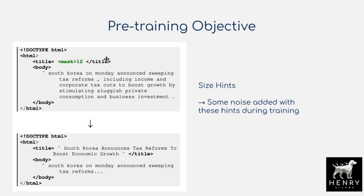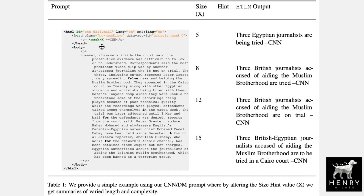Here's an example of how the size hint can produce different generations for filling out the prompt. We have a body describing a news article, and then in the paragraph heading we have the title of the article. Instead of title tags, we might have head tags with a paragraph describing the title. We have mask X, and replace X with different sizes to get different generations.